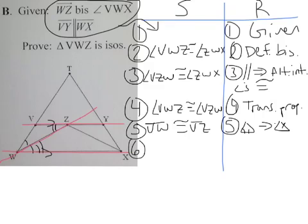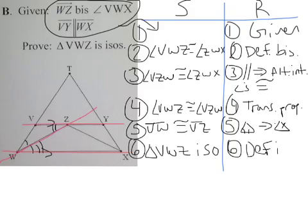And, lastly, I have myself an isosceles triangle. Triangle VWZ is iso. And, it's definition iso triangle. Boom. Done.